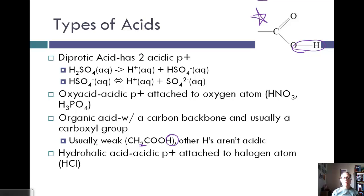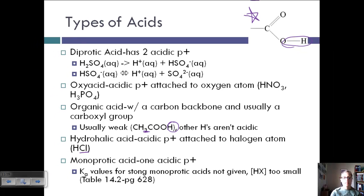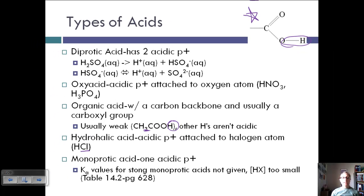Hydrohalic acids are where the acidic proton is attached to a halogen atom — for example, HCl, since chlorine is a halogen. Monoprotic acids have one acidic proton, so HCl also qualifies as monoprotic. For monoprotic strong acids, Ka values aren't given because the acid completely dissociates, making the concentration of HX so small that Ka would be negligible.